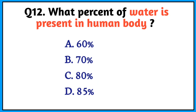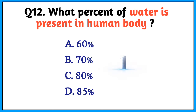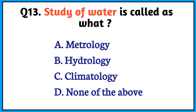Question number 12. What percent of water is present in the human body? The right answer is option A. 60%.